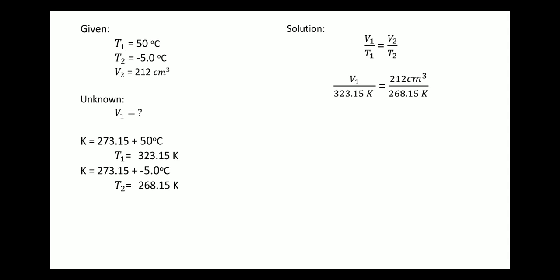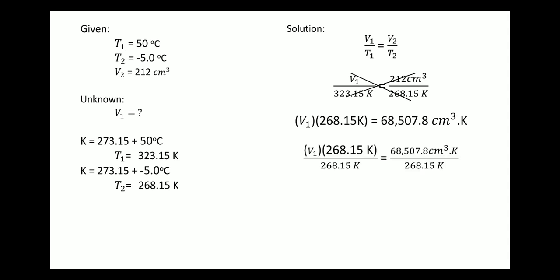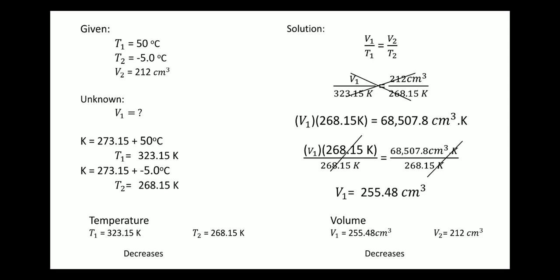Substituting the values: V1 over 323.15 Kelvin is equal to 212 cm³ over 268.15 Kelvin. Cross multiply: V1 times 268.15 Kelvin equals 323.15 Kelvin times 212 cm³, which is 68,507.8 cm³·Kelvin. To find V1, divide both sides by 268.15, cancel Kelvin. 68,507.8 cm³ divided by 268.15 gives V1 equal to 255.48 cm³.